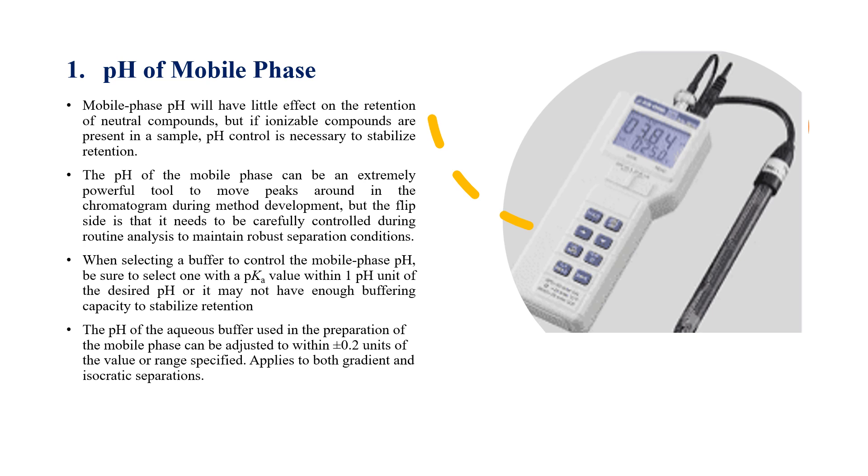The pH of the aqueous buffer used in the preparation of the mobile phase can be adjusted within plus or minus 0.2 units of the value. This applies to both gradient and isocratic separation.